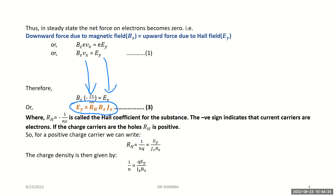We have replaced −1/(n·e) by R_H, which is a constant for a given specimen and is called the Hall coefficient. Here n is the electron density, e is the charge of the electron, and the negative sign indicates that the charge carriers are electrons (negative charges). For positive charges, the Hall coefficient will be positive. So we can write R_H = 1/(n·q), and from equation 3, R_H = E_y / (J_x · B_z).